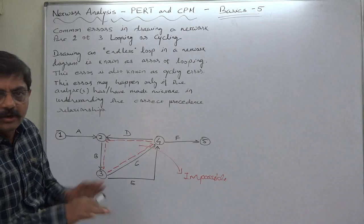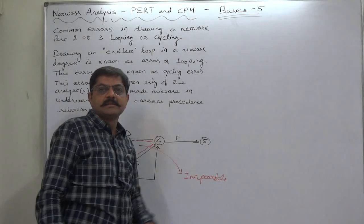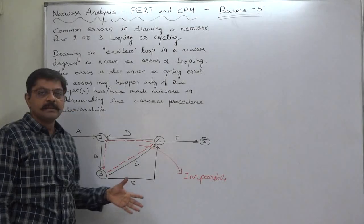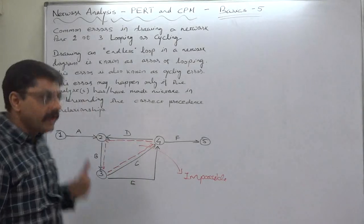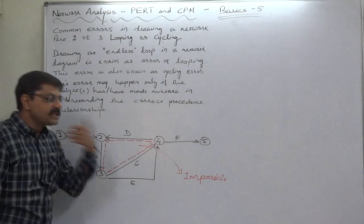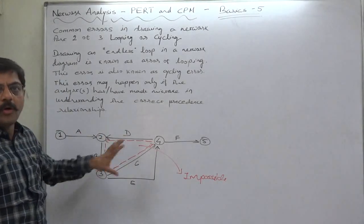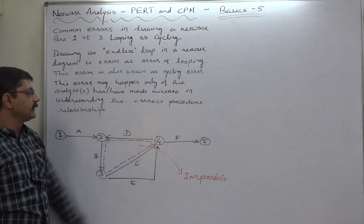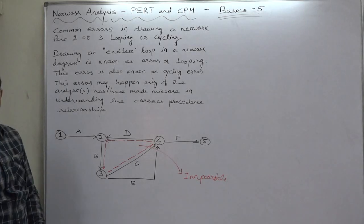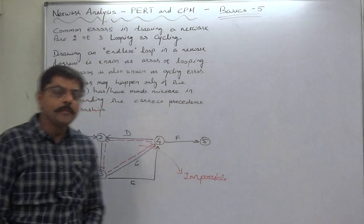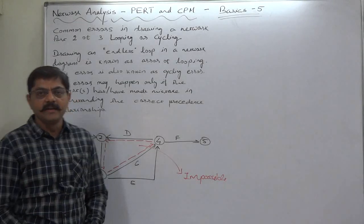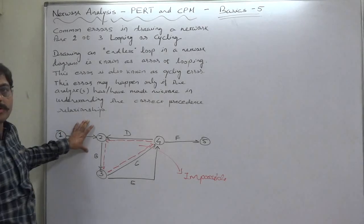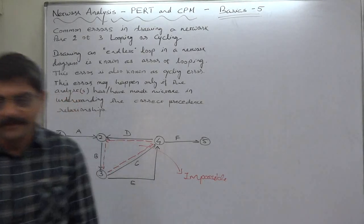So this is impossible kind of situation and this may be an error in drawing or making misinterpretation at the time of drawing the PERT chart, or mainly because of mistake in understanding the correct precedence relationship by the technical persons who provides the technical information about the whole network to the person who draws the PERT chart. Thank you very much.